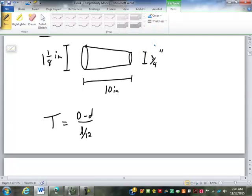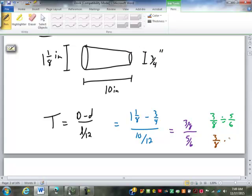Taper is always defined as inches of diameter per foot of length. So, the taper T is big D minus little D over L divided by 12, where all measurements, both D's and L are in inches. So, this will be 1 and 1/8 minus 3/4 over 10 divided by 12. So, 1 and 1/8 minus 3/4 is 3/8. 10 divided by 12, I'm just going to make that 10/12 and reduce it to 5/6. So, now I have 3/8 divided by 5/6, which is going to become 3/8 times 6/5. And I'll cross-cancel the 8 and 6, both divide by 2, to give me 3 and 4. 3 times 3 is 9, 4 times 5 is 20. So, the taper here is 9/20 of an inch per foot. So, for every foot of length, the diameter will change by 9/20 of an inch or by 0.45 inches for every foot of length.